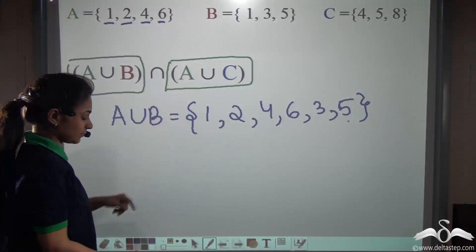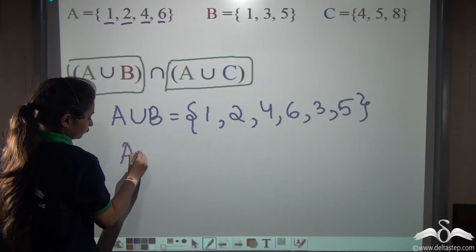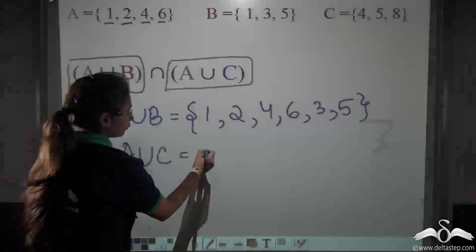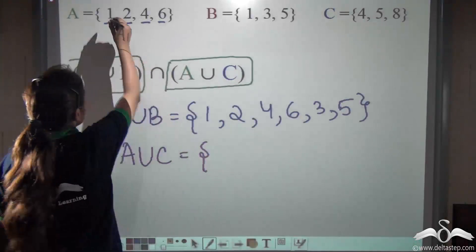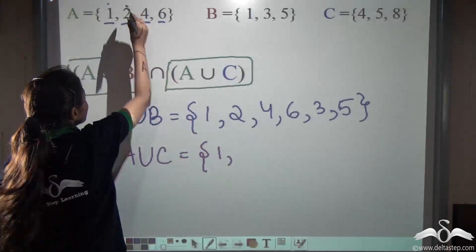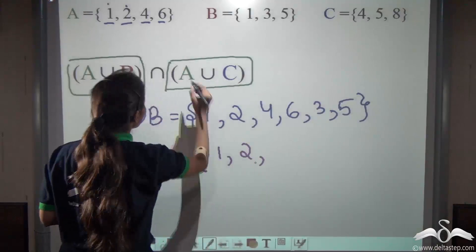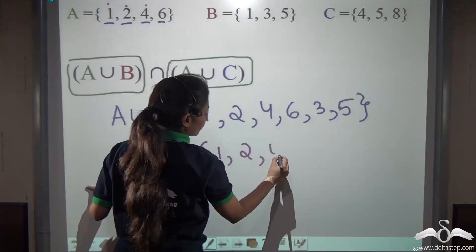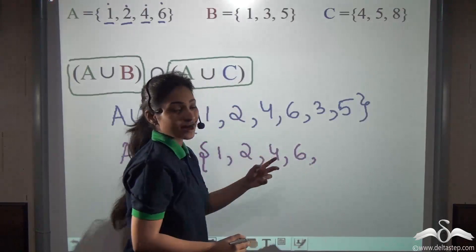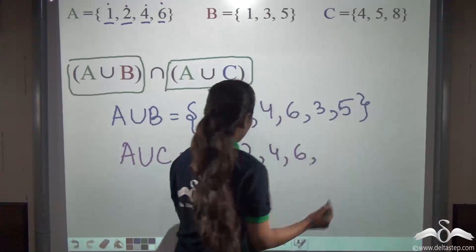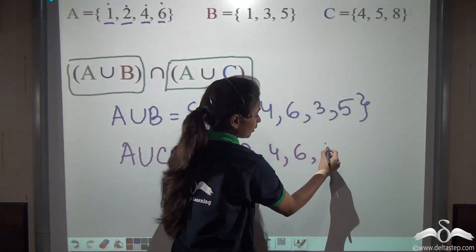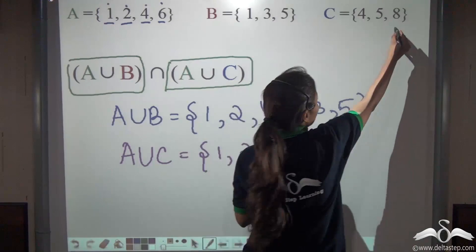A union C: we write 1, 2, 4, 6 from A, then look at the elements of set C. 4 is already written, so we will not repeat it. 5 has not been written, so write it, and 8. So A union C = {1, 2, 4, 6, 5, 8}.